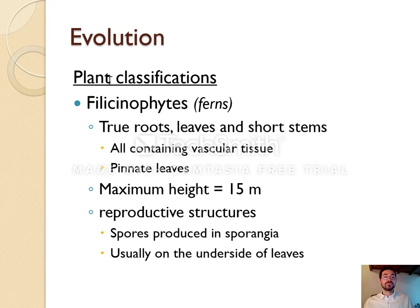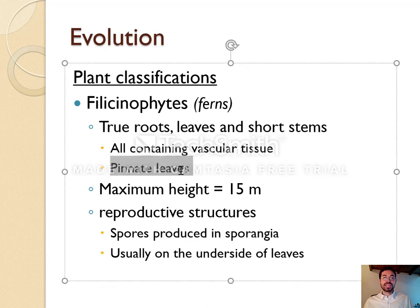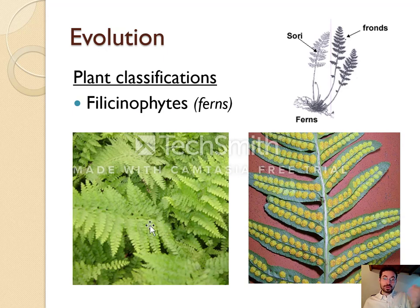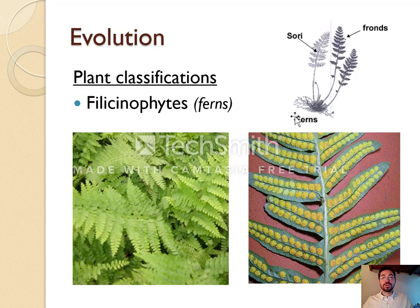Ferns, whose phylum name is Filicinophy­ta, have real roots, leaves, and stems with real xylem and phloem — vascular tissue. Their leaves tend to have a triangular or pinnate shape, meaning divided into leaflets. Some fern trees can grow up to 15 meters tall. Like mosses, ferns also reproduce with spores — you only find them in places with water. If you lift a fern leaf and look underneath, you can see packets of spores called sporangia. When it rains, water drips off the leaves, carrying spores into the soil where new ferns can grow.